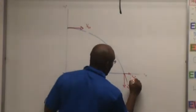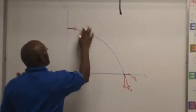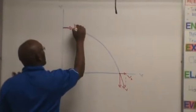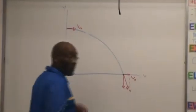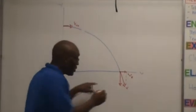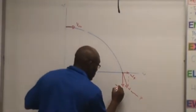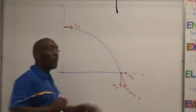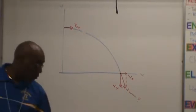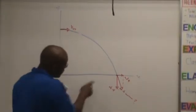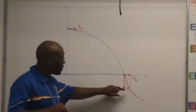Because this is going to be X. We're going to have a Y pointing down — do you see that? — and an X. It's going to be making an angle. So there are two components of velocities: the horizontal component and the vertical component.